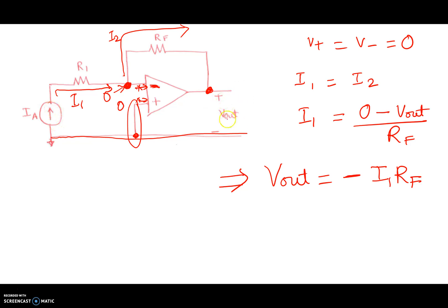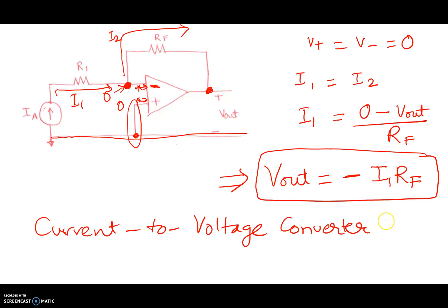So what's happening here? Well, the voltage at the output is the product of the current coming from the current source times the feedback resistance. So this is a popular way to change a current to a voltage. So this is also called a current to voltage converter topology.